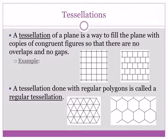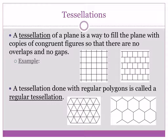Section 13.4, we're going to talk about something called tessellations. A tessellation of a plane is a way to fill up the plane with copies of congruent figures so that there are no overlaps and no gaps. When you were playing with pattern blocks, you were trying to fill things in — that's the idea of tessellation: no gaps, no overlaps.